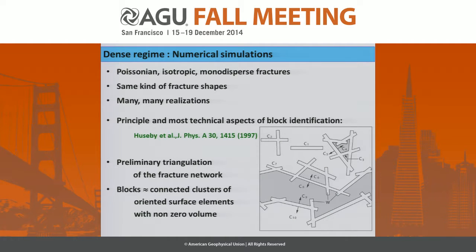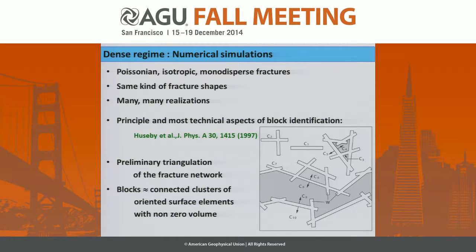Now let us go to the dense regime. Again, we have a Poissonian distribution of fractures, isotropic, same shapes, and we compute statistical averages. The principle of block identification in this regime is very simple: if you are in a building and want to count the number of rooms, you paint the walls. When you cannot proceed anymore, that is one block. Then you change your place, use a different color, and that is a second block, and so on. This is basically what we do in the computations.